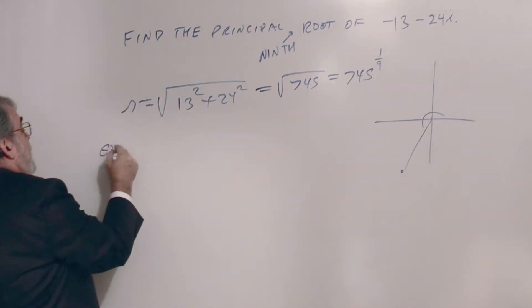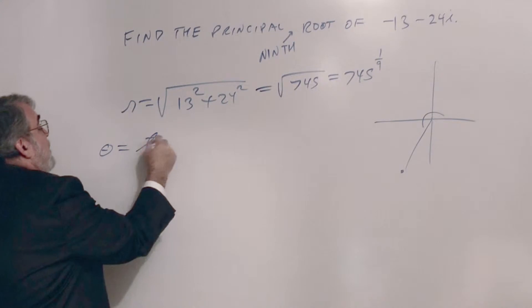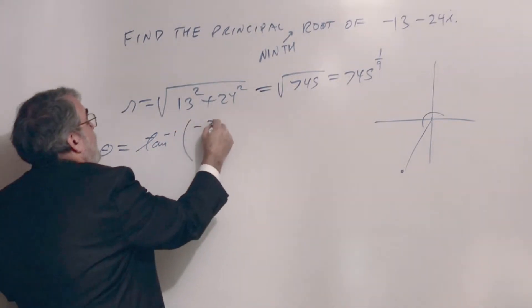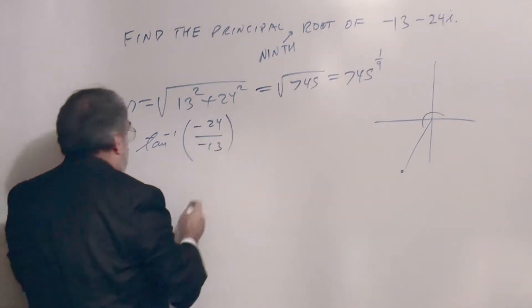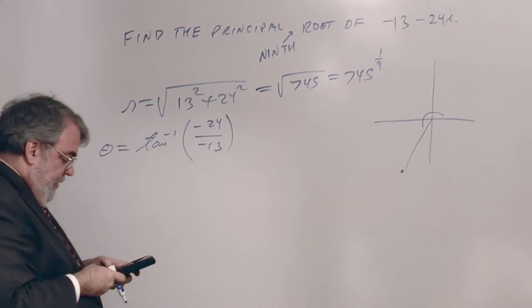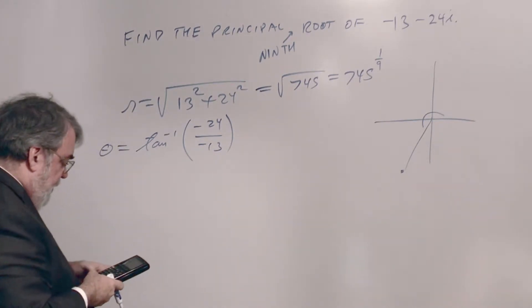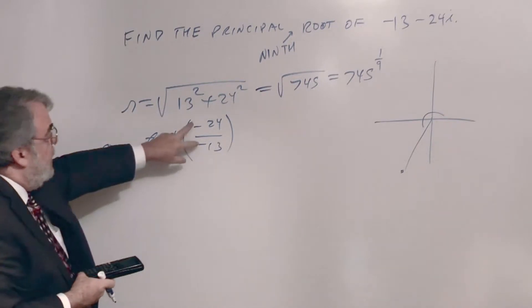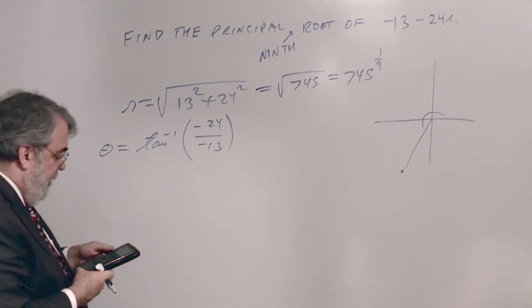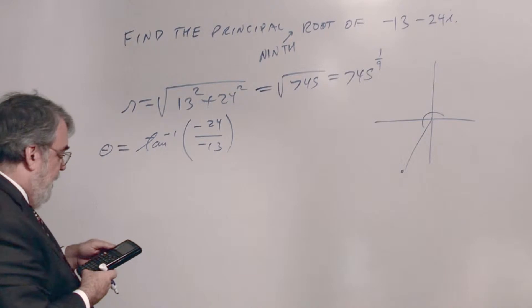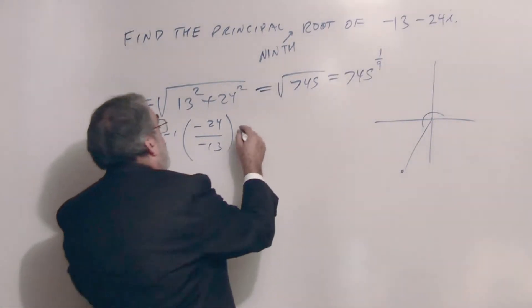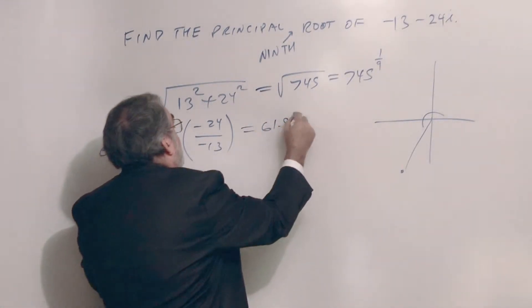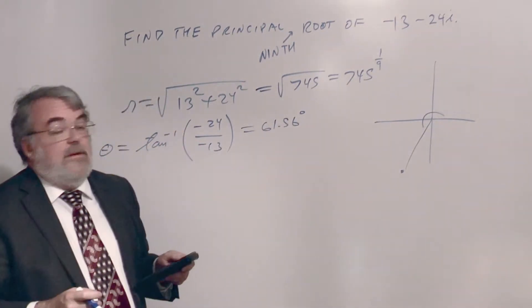So that's the square root of 745. Now the angle theta is inverse tangent of negative 24 over minus 13. So inverse tangent, negative 24 divided by negative 13. I could have just cancelled the negatives here, made it 24 over 13. Same difference. 61.56 degrees, which is wrong, isn't it?